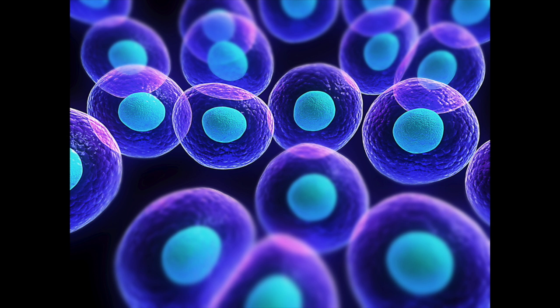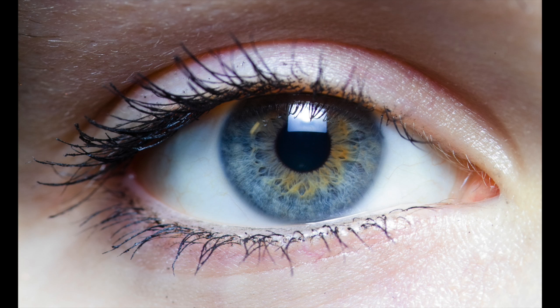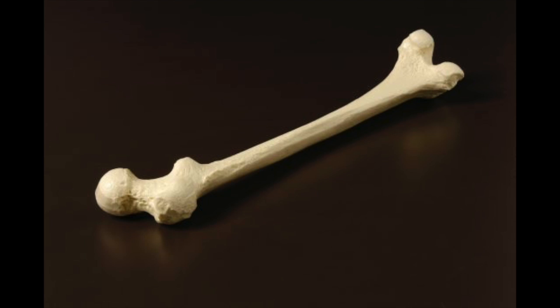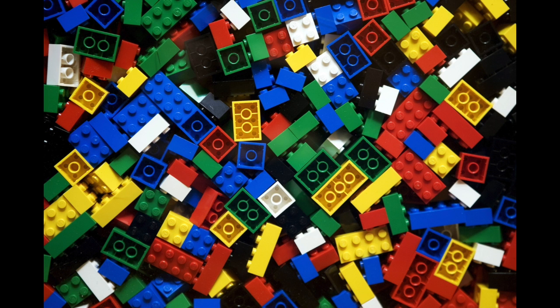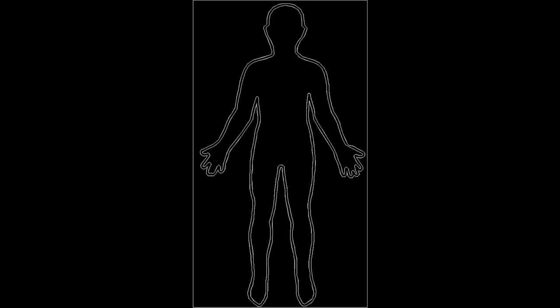Every single thing in your body is made up of cells. Cells make up your skin, they make up your bones, they even make up your hair and fingernails. But they are so small and so grouped together that you can't see or feel them — they simply group together to form you.